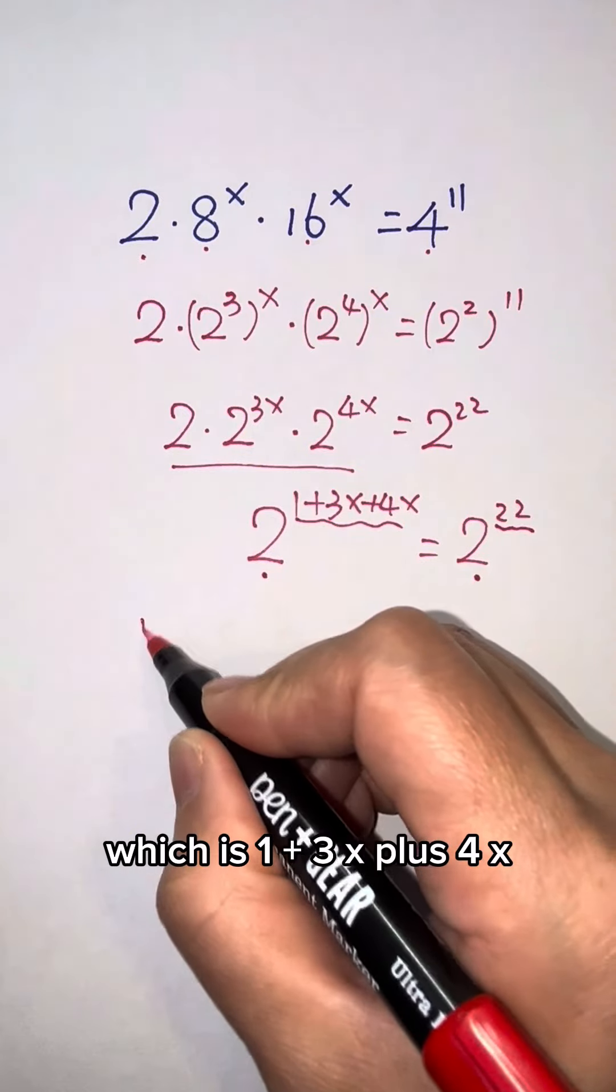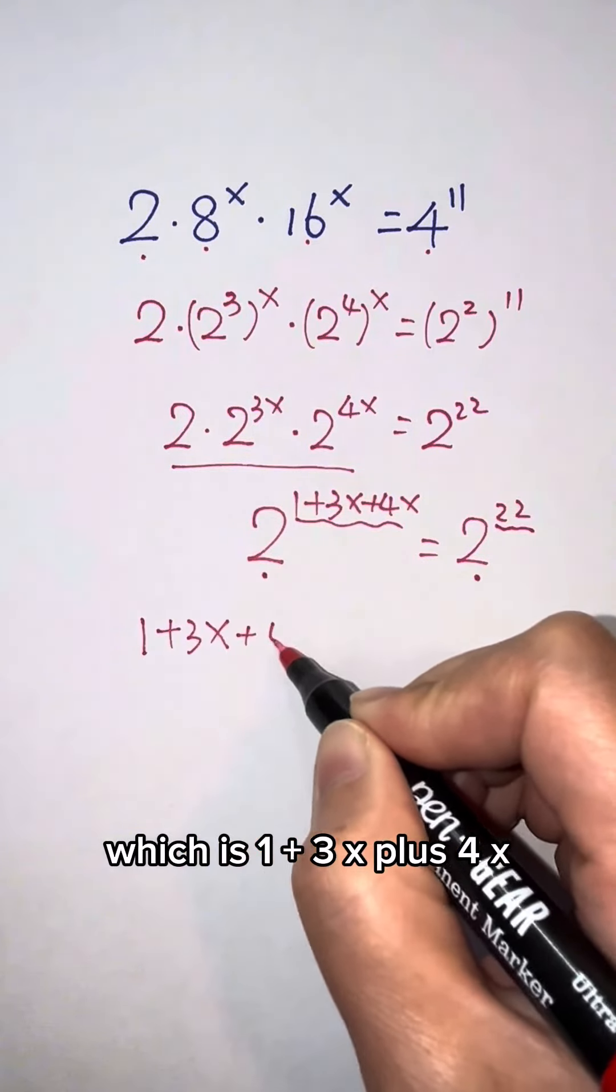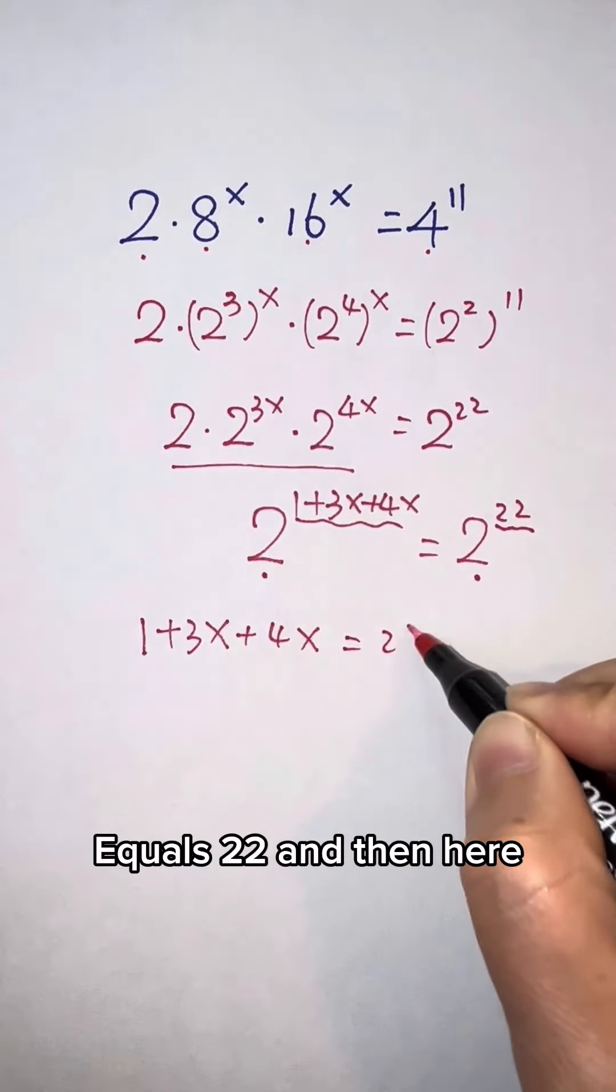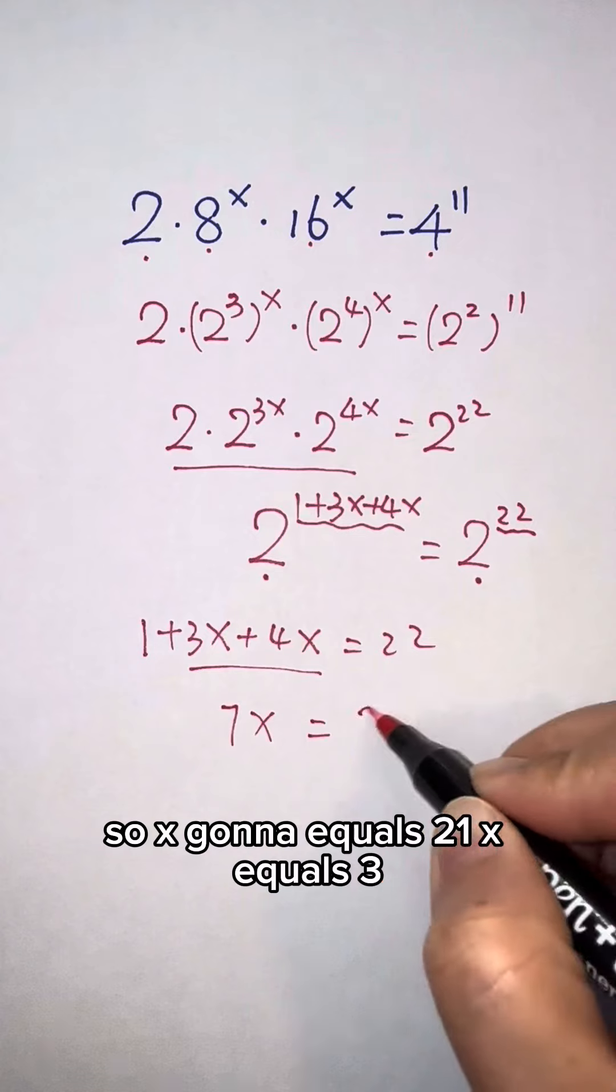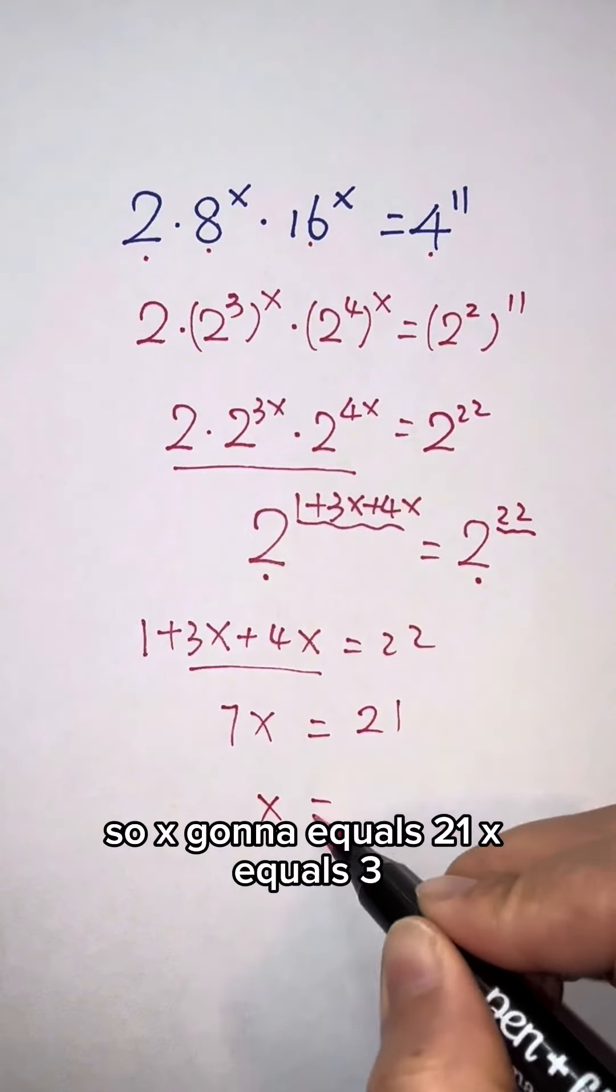Which is 1 plus 3x plus 4x equals 22. And here 7x equals 21. x equals 3.